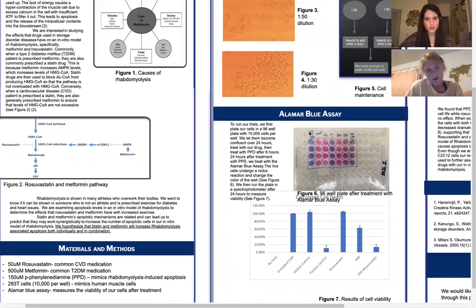So for our materials, we will need 500 micromoles of rosuvastatin, which is the cardiovascular disease medication. And then 500 micromoles of metformin, which is the type two diabetes medication. And then PPD, which is the in vitro model that we hope to get for rhabdomyolysis. And then we are using 293T cells to mimic human muscle cells. And then at the end, we want to use an Alamar blue assay to measure the viability of our cells after treatment.